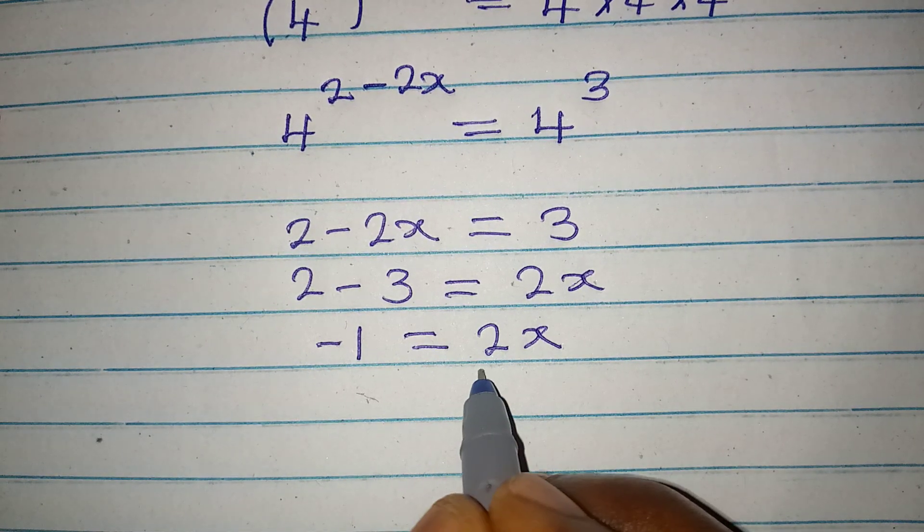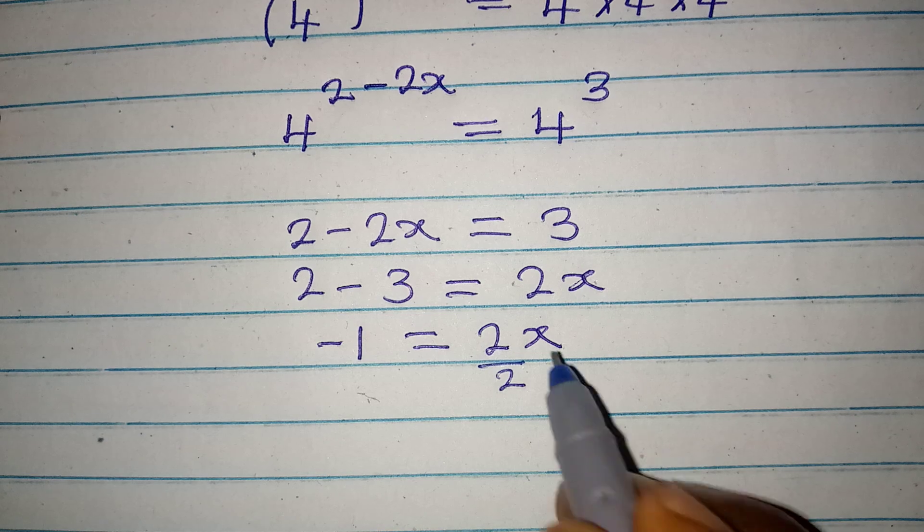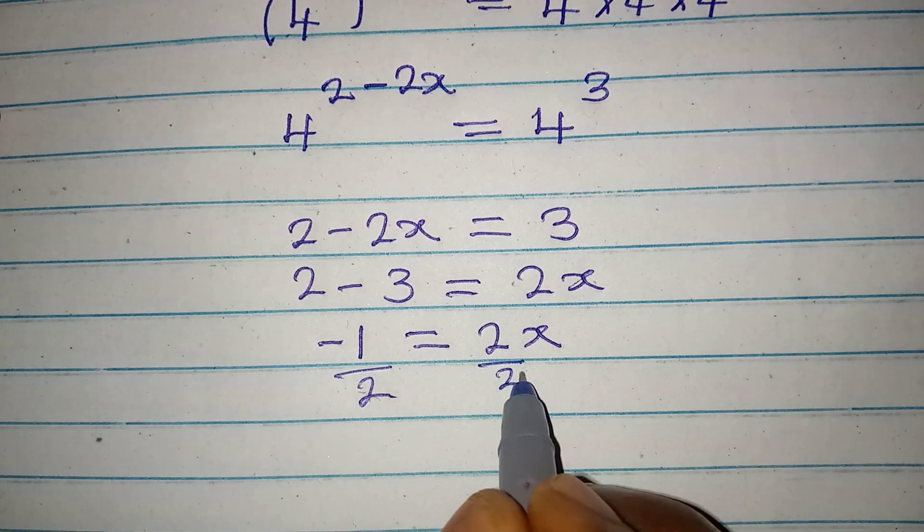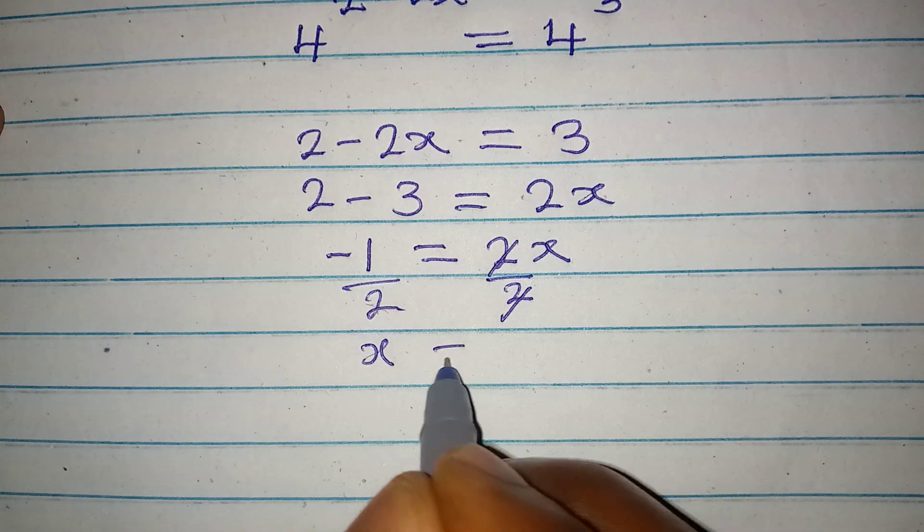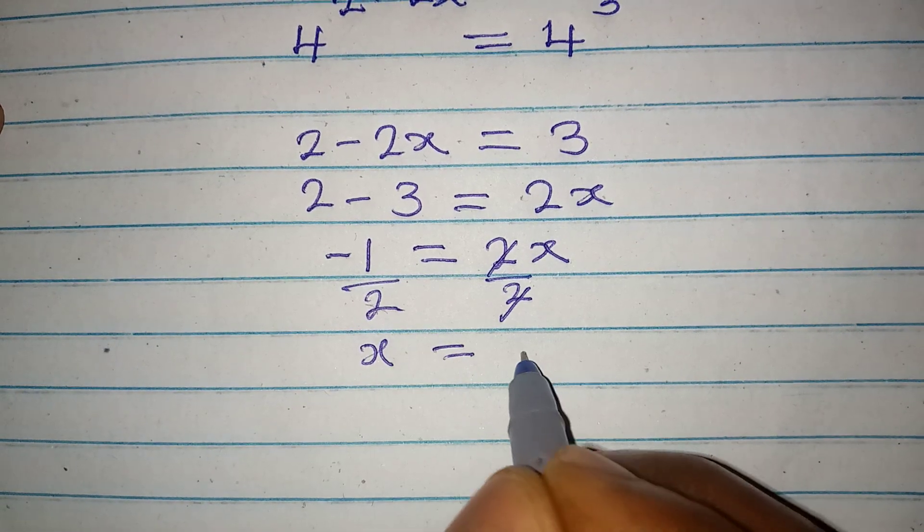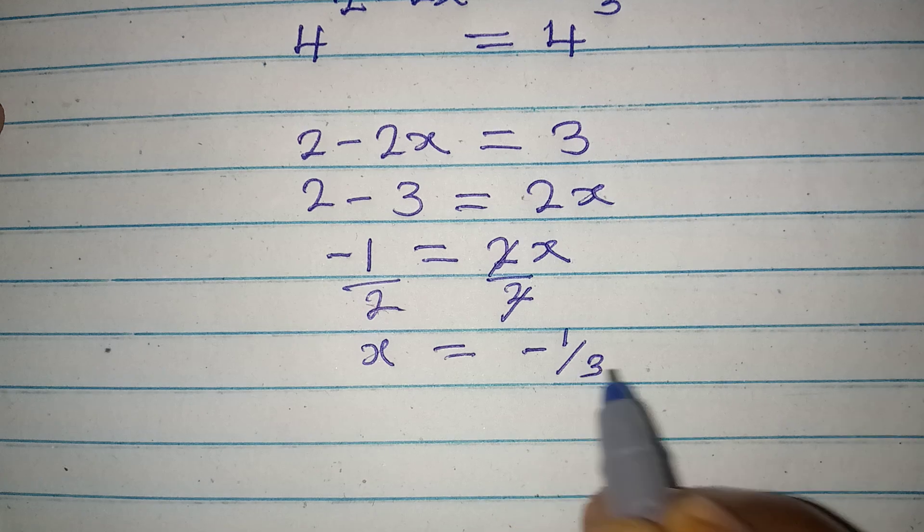I am collecting like terms. Now minus 1 is equal to 2x. And then to get x, we can divide by the coefficient of x. This and this will be gone. And now x is equal to minus 1 over 3.